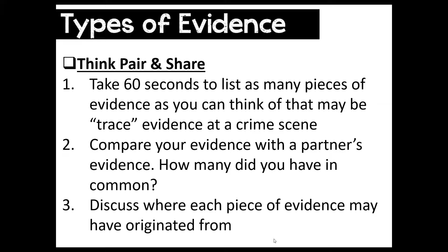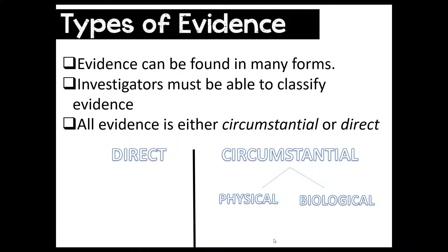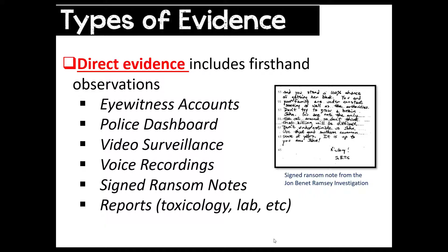After the lesson, I want you to come back and try to classify the different pieces of evidence you wrote down. Evidence can be found in many forms — investigators have to be able to classify that evidence. All evidence can be either direct or circumstantial. Circumstantial evidence can be further classified as either physical evidence or biological evidence, and we're going to go through definitions and examples.